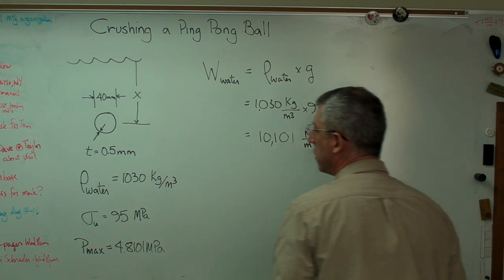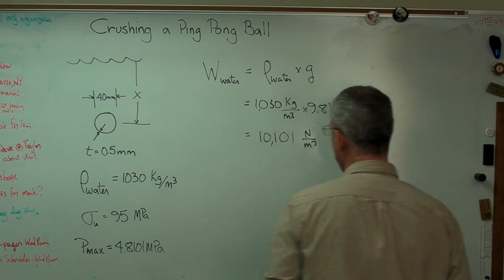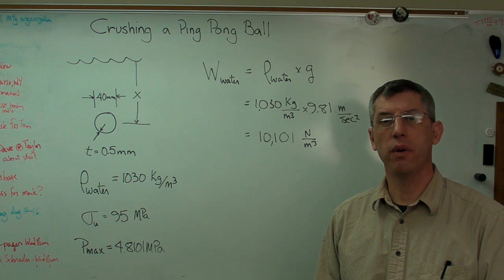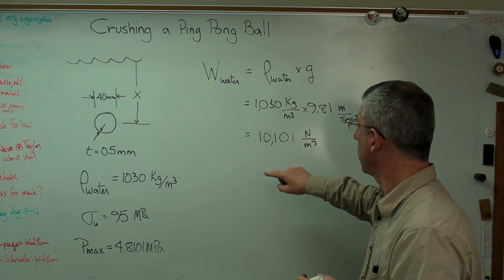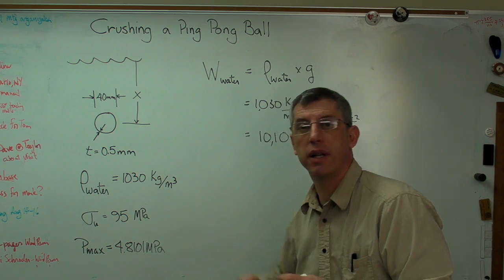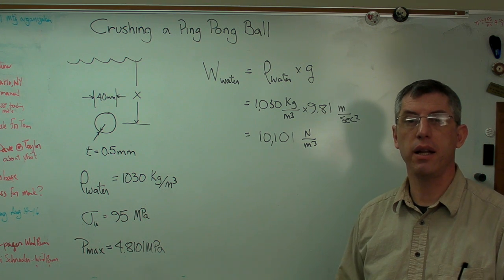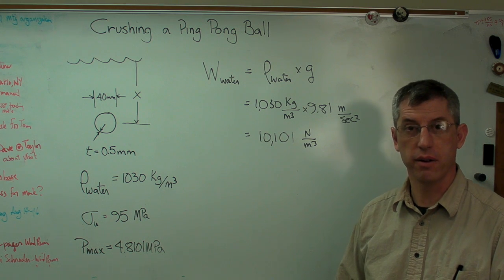All right. So that's a good number to know. Let's write that. Oh, let's see. I guess we can leave that there. Next thing we need to know is how tall a water column it takes to generate that pressure right there. Well, we know that every meter of water is going to add 10,101 newtons per square meter of pressure.